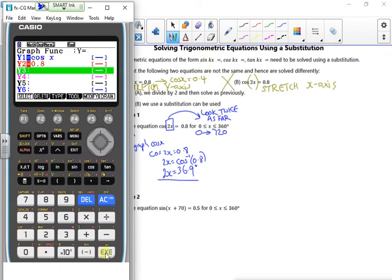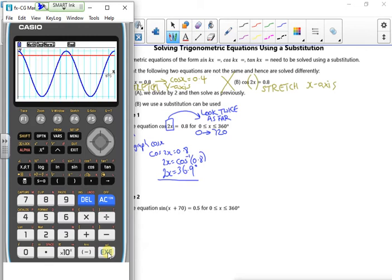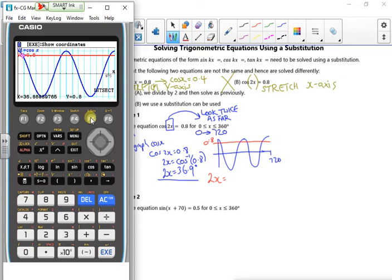I'm kind of twitching about showing you this because you've got your calculators. So what that gives me is a graph that's got 2 all the way up to 720 with a line going across at 0.8. Now what I'm doing is I'm looking twice as far and I'm looking for 2x. So if I do my g solve and my intersect, it gives me the 36.9 that I had before, it gives me 323.1, it gives me 396.9, it gives me 683.1.